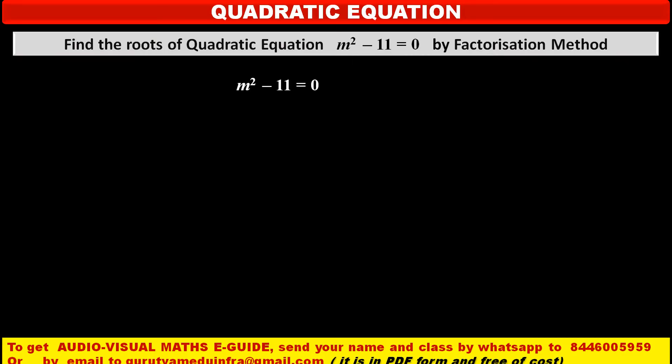Friends, now see the given quadratic equation. It is m² - 11 = 0. Here, the middle term is not given. That means the term of m is absent. Its coefficient is 0. So only two terms are given: m² and -11.